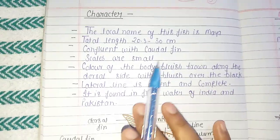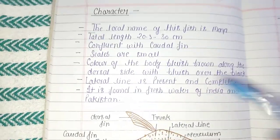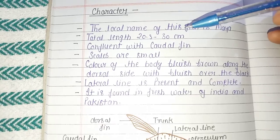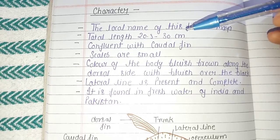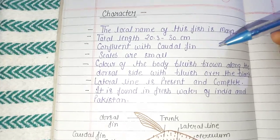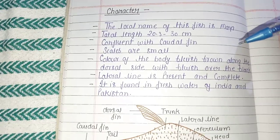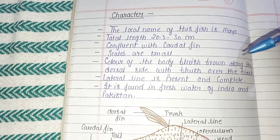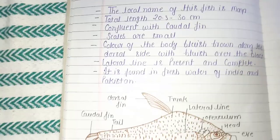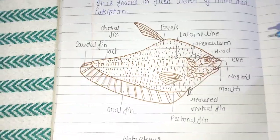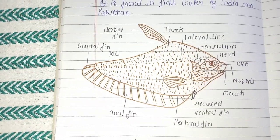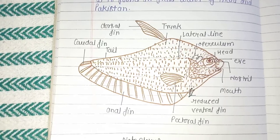General characters of Notopterus: the local name of the species is Maya. Total length is 20 to 30 centimeters. Scales are small. Color of the body is bluish. The lateral line is present and complete. It is found in freshwater of India and Pakistan. I hope this video is very helpful for exams. Thank you.